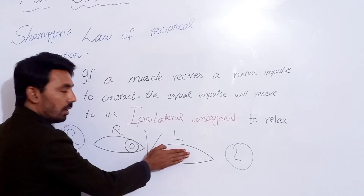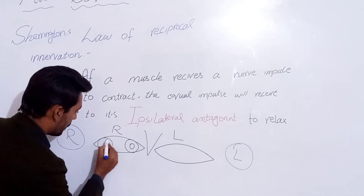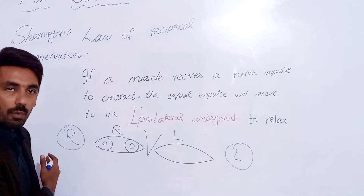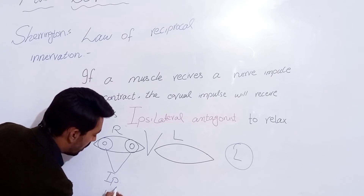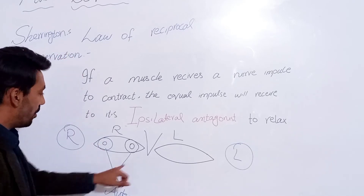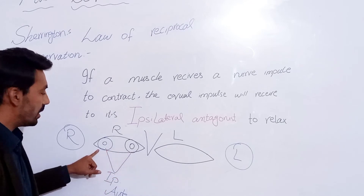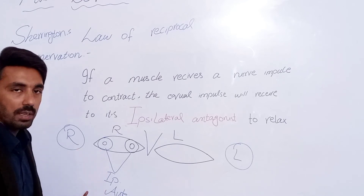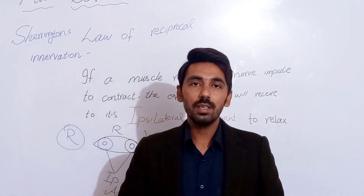If the medial rectus moves the eye towards the nose, the lateral rectus moves in the opposite direction — keeping the eye towards the lateral side, away from the nose. So medial rectus and lateral rectus are ipsilateral antagonists. According to Sherrington's law, if the medial rectus receives a nerve impulse to contract, its ipsilateral antagonist, the lateral rectus, receives the same innervation to relax. This is Sherrington's law of reciprocal innervation.